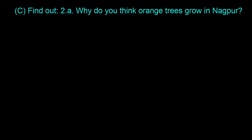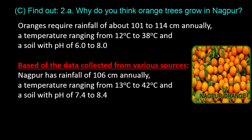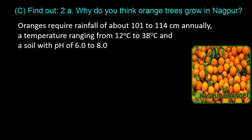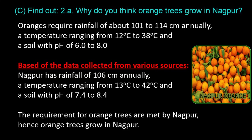Question C, Find Out, 2A: Why do you think orange trees grow in Nagpur? Oranges require rainfall of about 101 to 114 centimeters annually, a temperature ranging from 12 to 38 degrees Celsius, and a soil with pH of 6.0 to 8.0. Based on data collected from various sources, Nagpur has rainfall of 106 centimeters annually, a temperature ranging from 13 to 42 degrees Celsius, and a soil with pH of 7.4 to 8.4. The requirements for orange trees are met by Nagpur, hence orange trees grow in Nagpur.